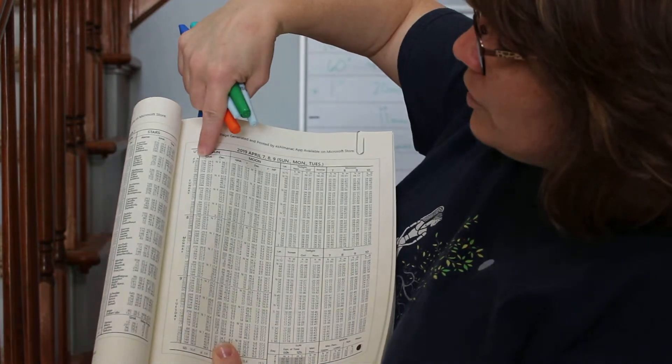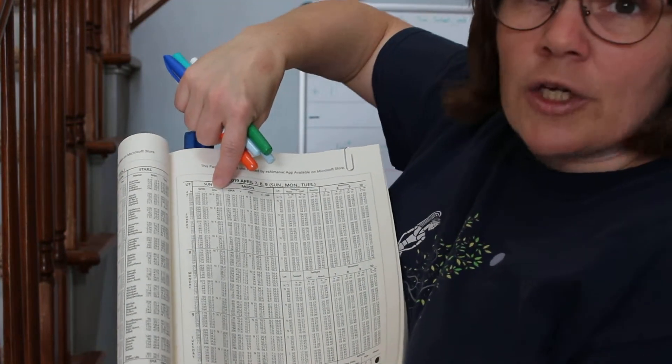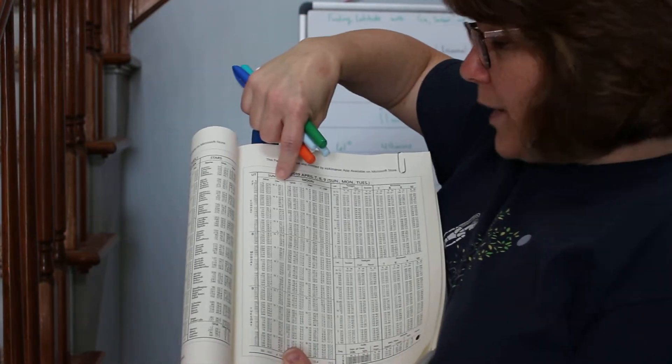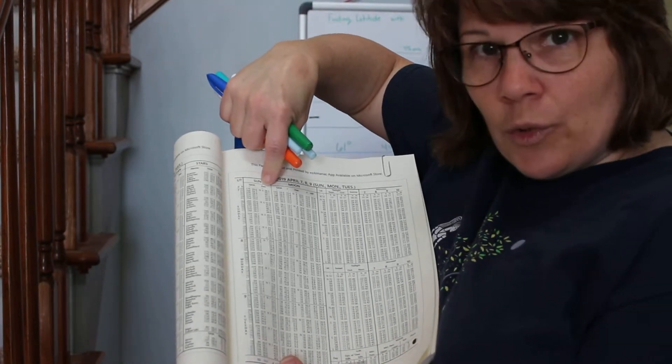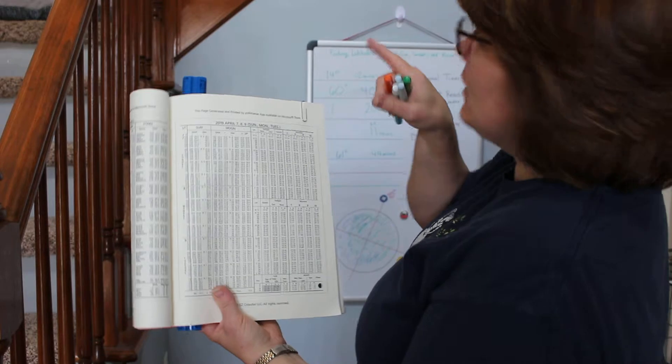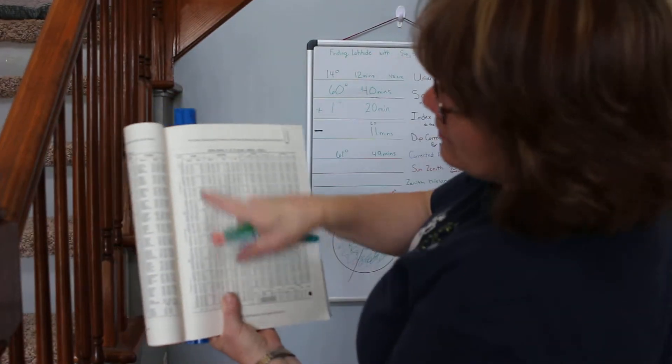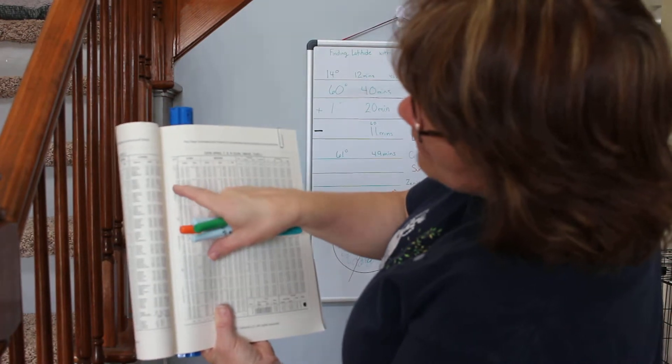We're looking at April 7th and we're working with the sun, and then it has this line for declination. How far north or south of the equator the sun is today at high noon in Greenwich. So I take my declination for the sun and my time, which is 14 hours and 12 minutes, and I go down this side and find my hours.